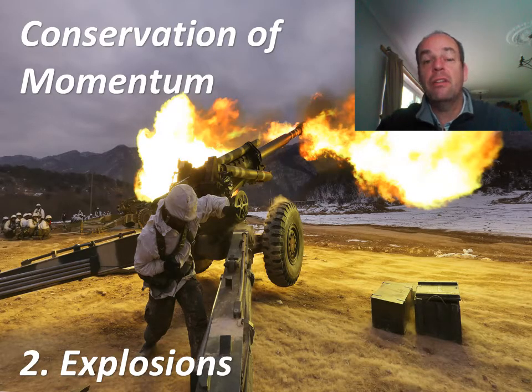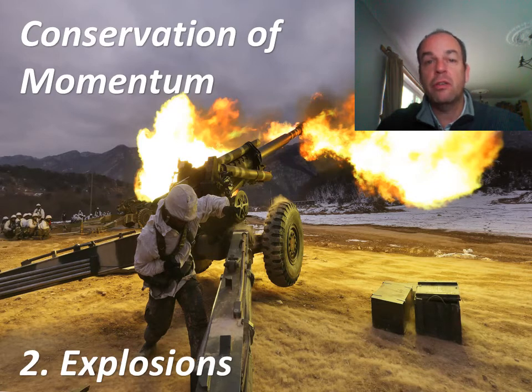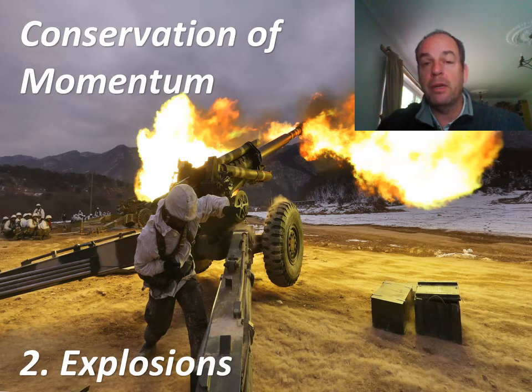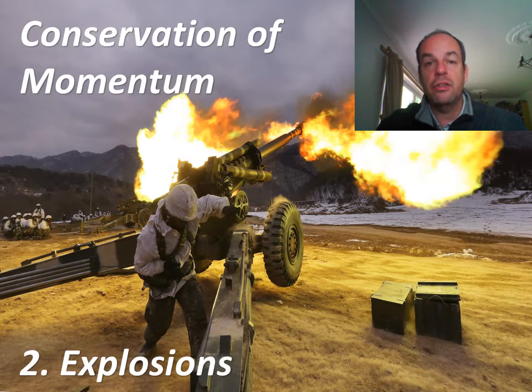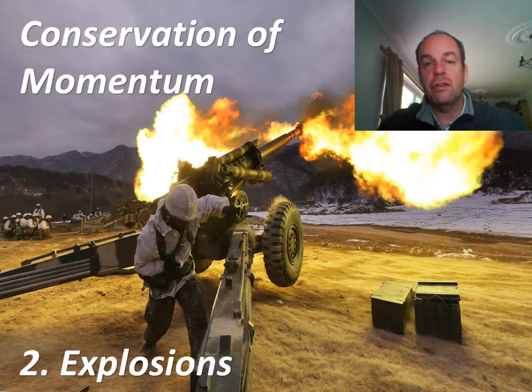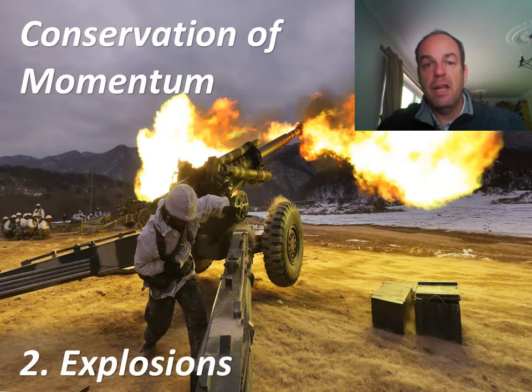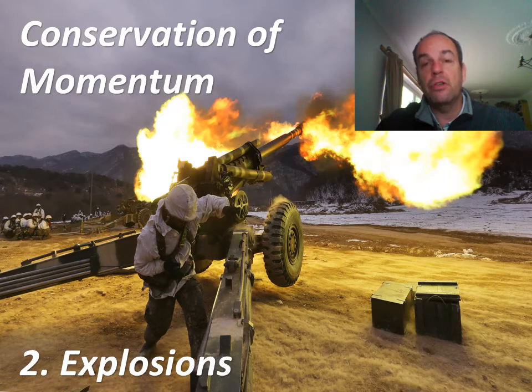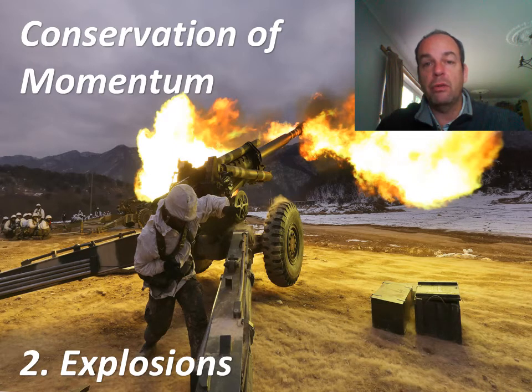The next situation that we need to apply conservation of momentum is to explosions. Explosions come in different types don't they - you can have a bomb exploding, you can have a gun firing, or as in this picture here you can have a large artillery piece being fired. But the important thing for all explosions is that before the explosion the bullet or the shell and the gun itself remain stationary, and then they fly off in opposite directions. So a gun will recoil and an explosion will explode in all directions, and that's important to think about.